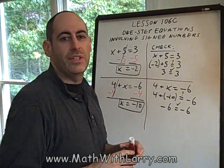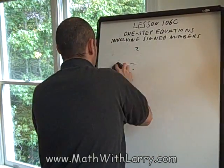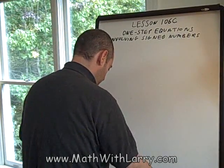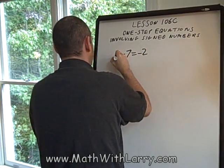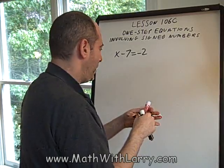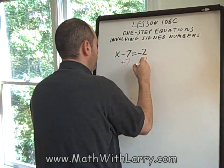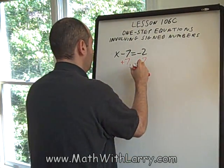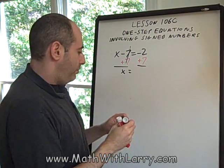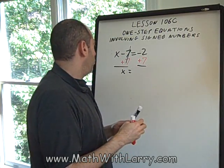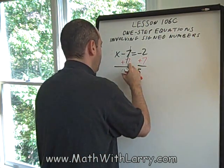We'll do x minus 7 equals negative 2. Okay, so we have x minus 7 equals negative 2. Again, we want to get x by itself, so we'll do the opposite of what we see. Instead of minus 7, we'll do plus 7. Do that on both sides. The 7's cancel out because they equal 0. Now, we have negative 2 plus 7. Again, you really have to feel comfortable with how to do that. Negative 2 plus 7 is 5.